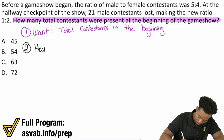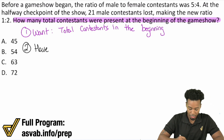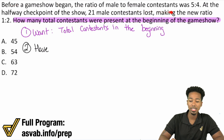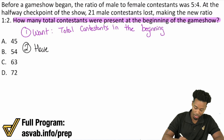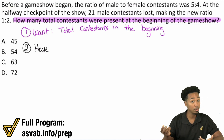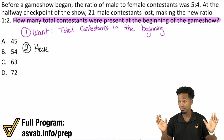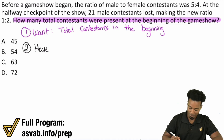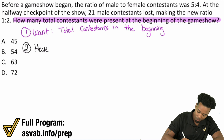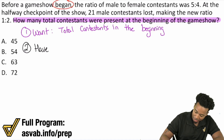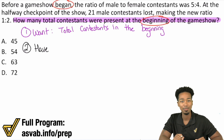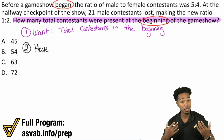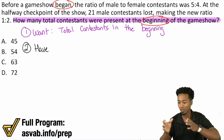Before the game show began, the ratio of male to female contestants was five to four. So in the beginning, the ratio of male to female contestants is five to four. There's a timeline here — I haven't gone through all the information, but we can already see there's something happening in terms of start, middle, and end.